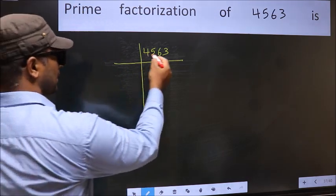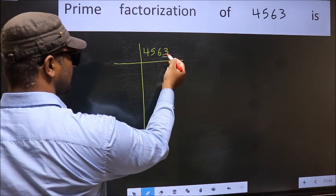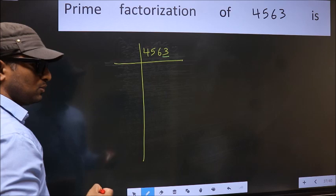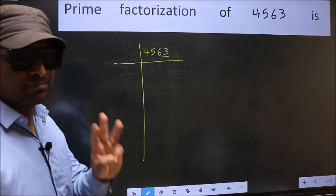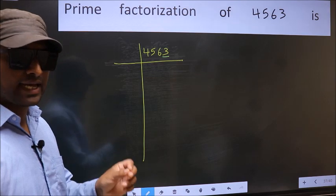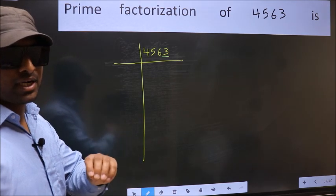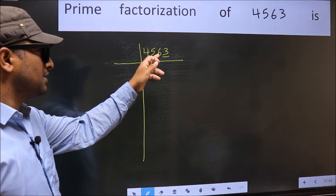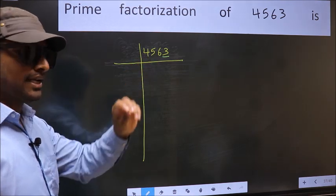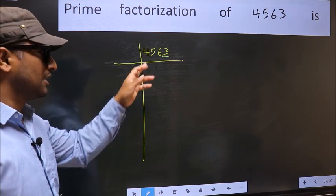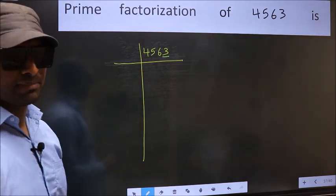Next, in this number, the last digit is 3, not even. So this is not divisible by 2. Next prime number 3. To check divisibility by 3, we should add the digits. What I mean is 4 plus 5 plus 6 plus 3. We get 18, and 18 is divisible by 3. So this number is also divisible by 3.